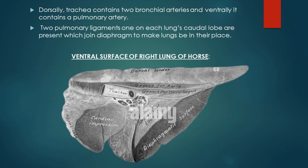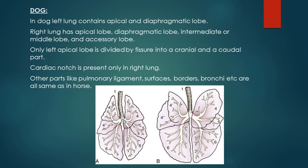In case of horse, when the trachea enters the fifth level of the intercostal space it forms two principal bronchi, and each principal bronchus enters one lung. Two pulmonary ligaments, one on each lung's caudal lobe, are present which join the diaphragm to keep the lungs in their place.